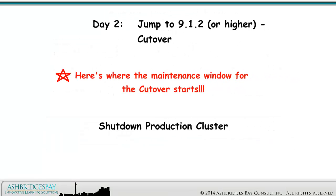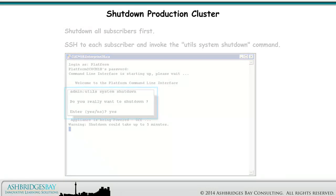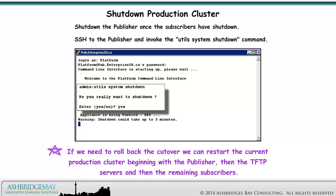Now we open a maintenance window and shut down the production cluster. Shut down all subscribers first. SSH to each subscriber and invoke the Utils System Shutdown command. Shut down the publisher once the subscribers have shut down. SSH to the publisher and invoke the Utils System Shutdown command. If we need to roll back the cutover, we can restart the current production cluster beginning with the publisher, then the TFTP servers, and then the remaining subscribers.